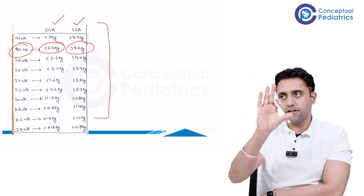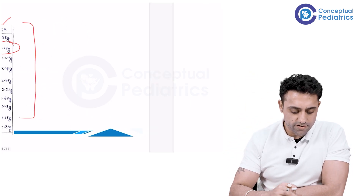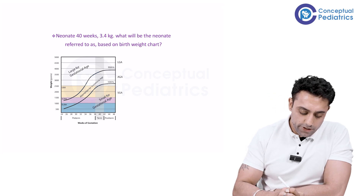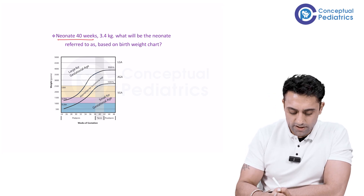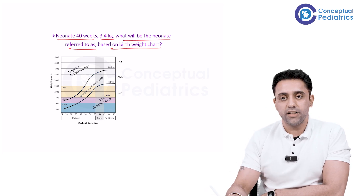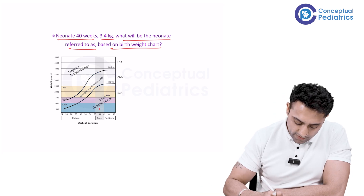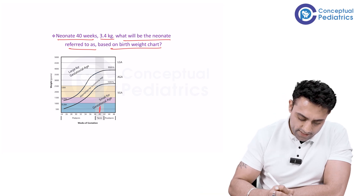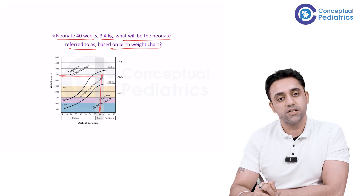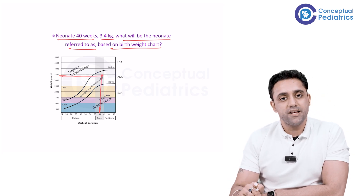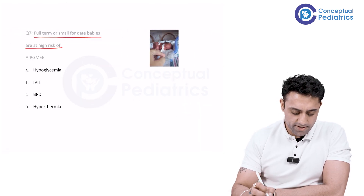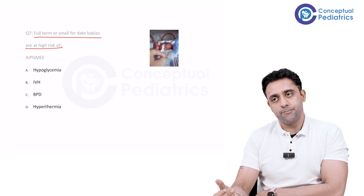MCQ: A neonate, 40 weeks, 3.4 kg — what will the neonate be referred to as based on the birth weight chart? At 40 weeks and 3.4 kg, if I draw a straight line on both axes, the best answer is appropriate for gestational age.